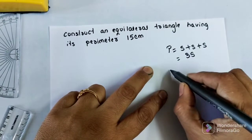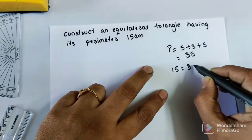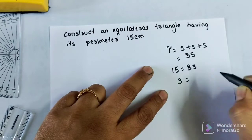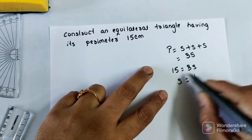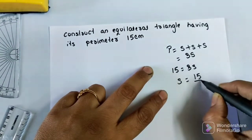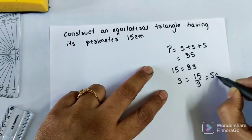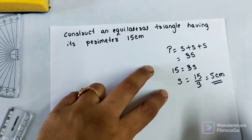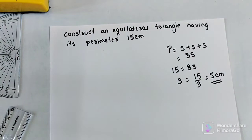So now perimeter is known. So that is 15 is equal to 3 times sides. So side will be each side, the dimension we can get it as 15 by 3 which is nothing but 5 cm. So now we have the 5 cm. Using this we can construct the equilateral triangle.